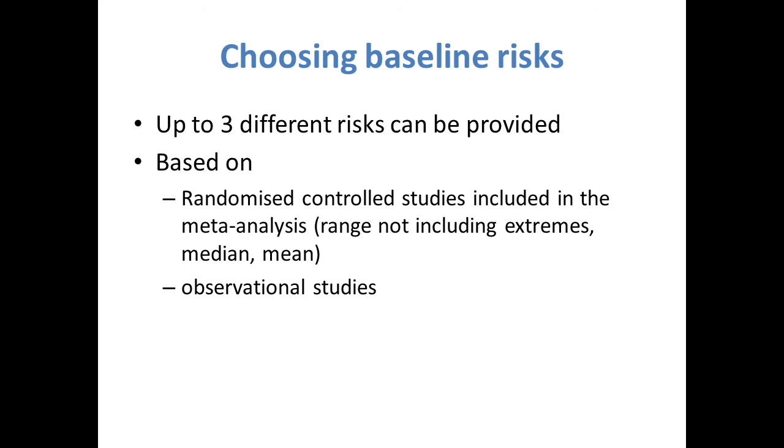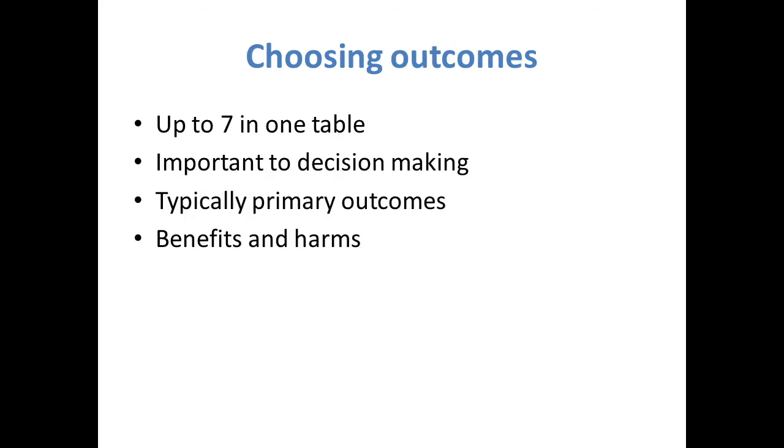Once you've decided on which intervention, comparator, and population to include in your Summary of Findings table, you will need to decide which outcomes to include. You have the option to include up to 7 outcomes. These are the outcomes that someone would consider important when making a decision about whether to use an intervention or not. These are typically the primary outcomes that were identified in the review at protocol stage. Consequently, the table should include both benefits and harms or downsides.